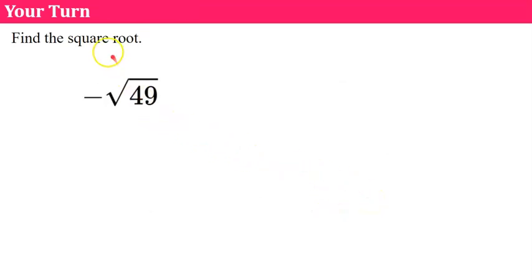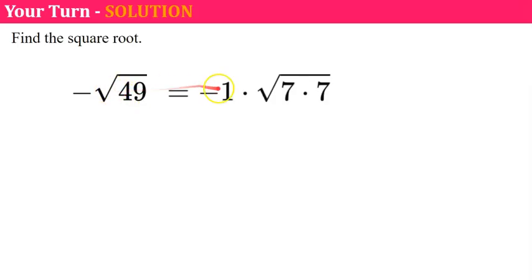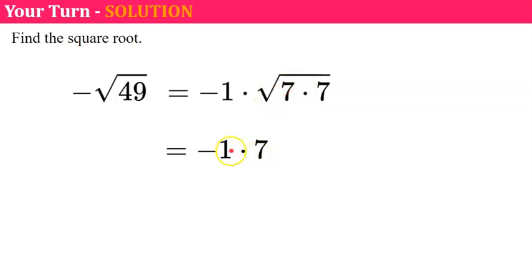Find the negative square root of 49. This is negative one multiplied by the square root of 49. We know that 49 is 7 times 7, so the square root of 49 is 7. Negative one times 7 is negative 7.